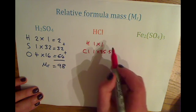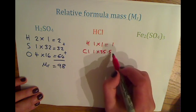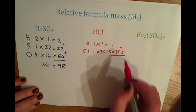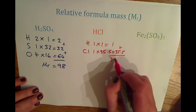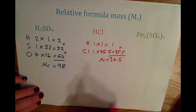Add these two numbers together once you've done the calculation, and you will get the relative formula mass of 36.5 for HCl.